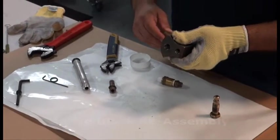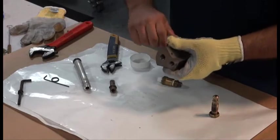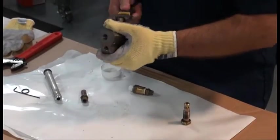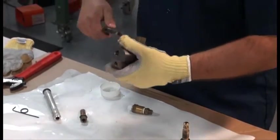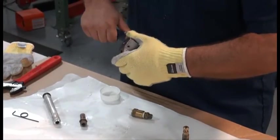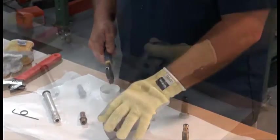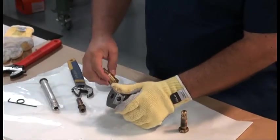Place Teflon tape on all component threads prior to reassembly to the purge block. The components can be assembled to the purge block prior to installation on the platen cover as shown here or attached after the purge block has been secured to the platen cover.